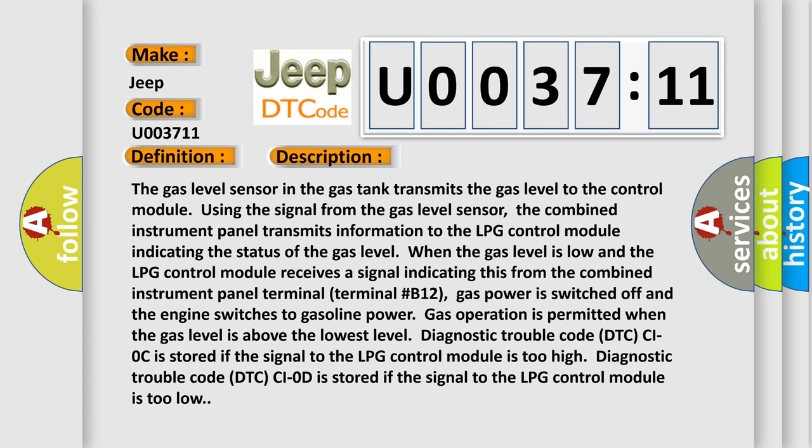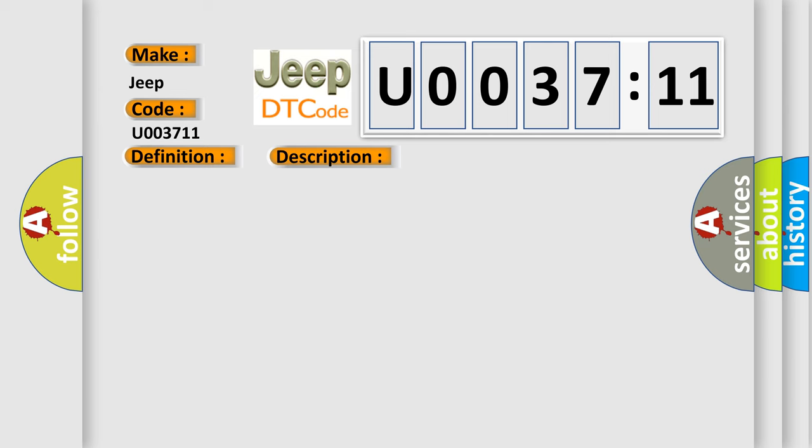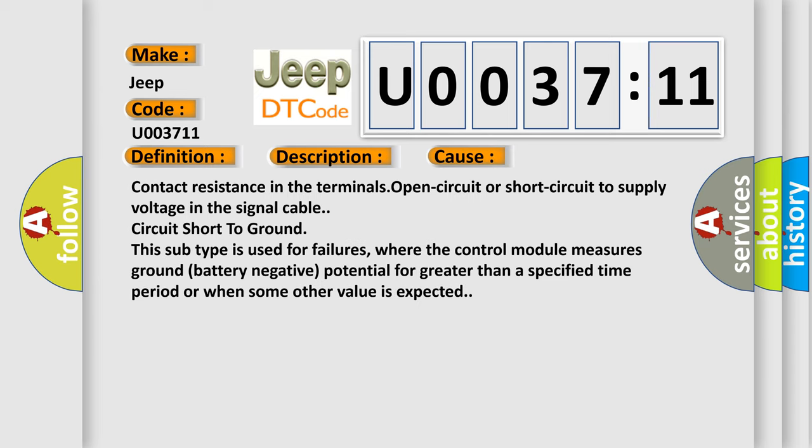This diagnostic error occurs most often in these cases: contact resistance in the terminals, open circuit or short circuit to supply voltage in the signal cable, circuit short to ground. This subtype is used for failures where the control module measures ground battery negative potential for greater than a specified time period or when some other value is expected.